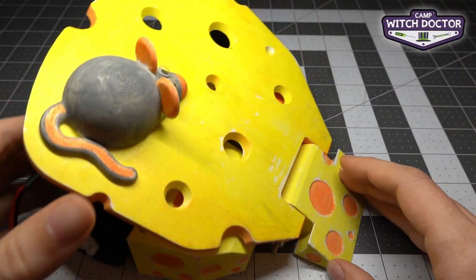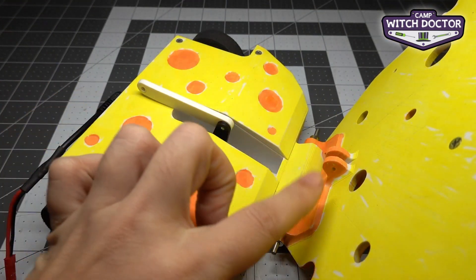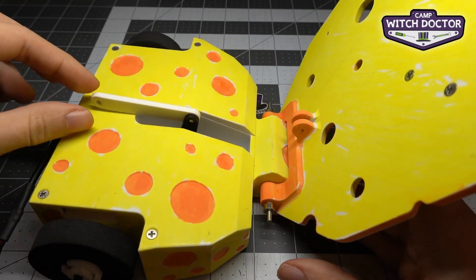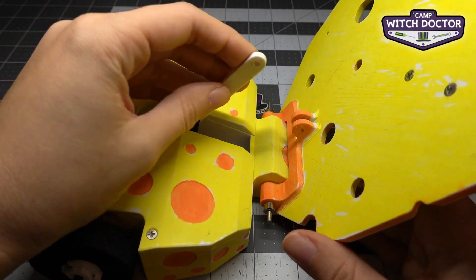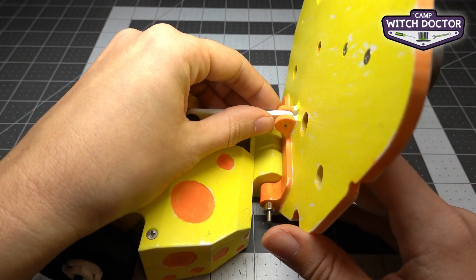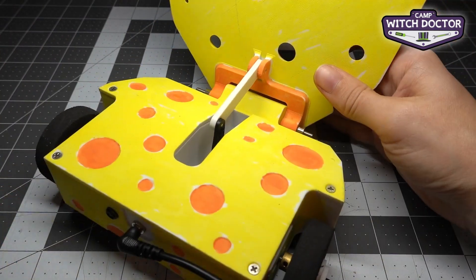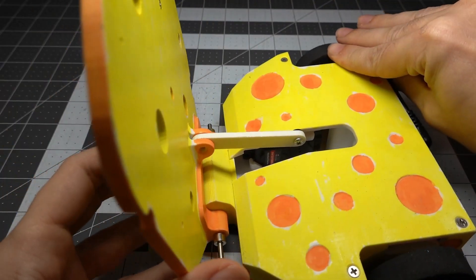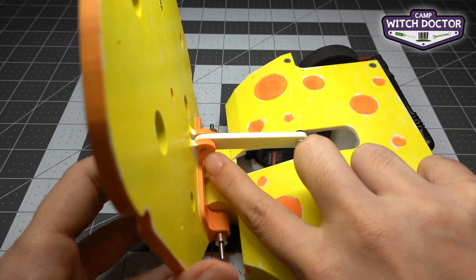So the last thing we have left to do is to attach our servo to the weapon arm. We'll take this link that we installed before and it's going to screw right through this mount here. So we're going to line it up and then you're going to install the screw from the side with the countersink.